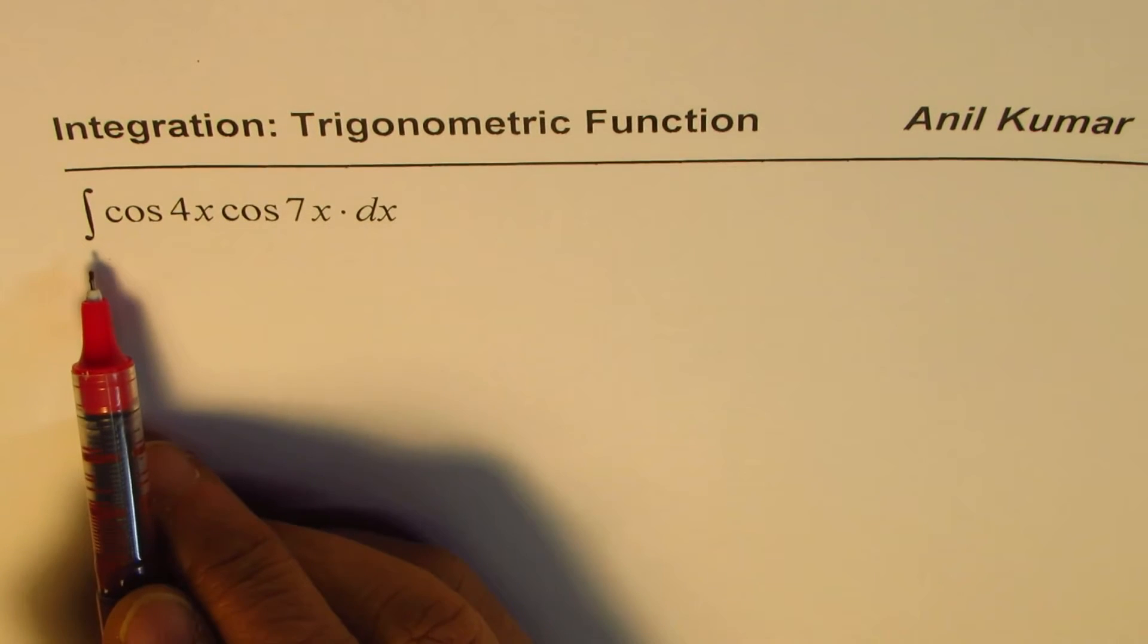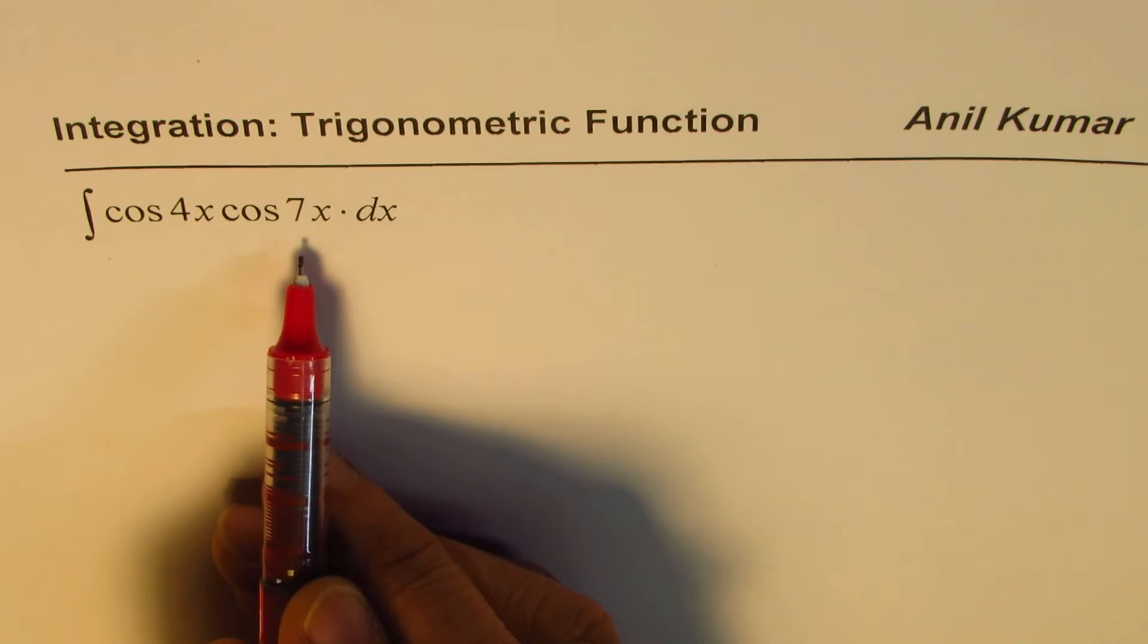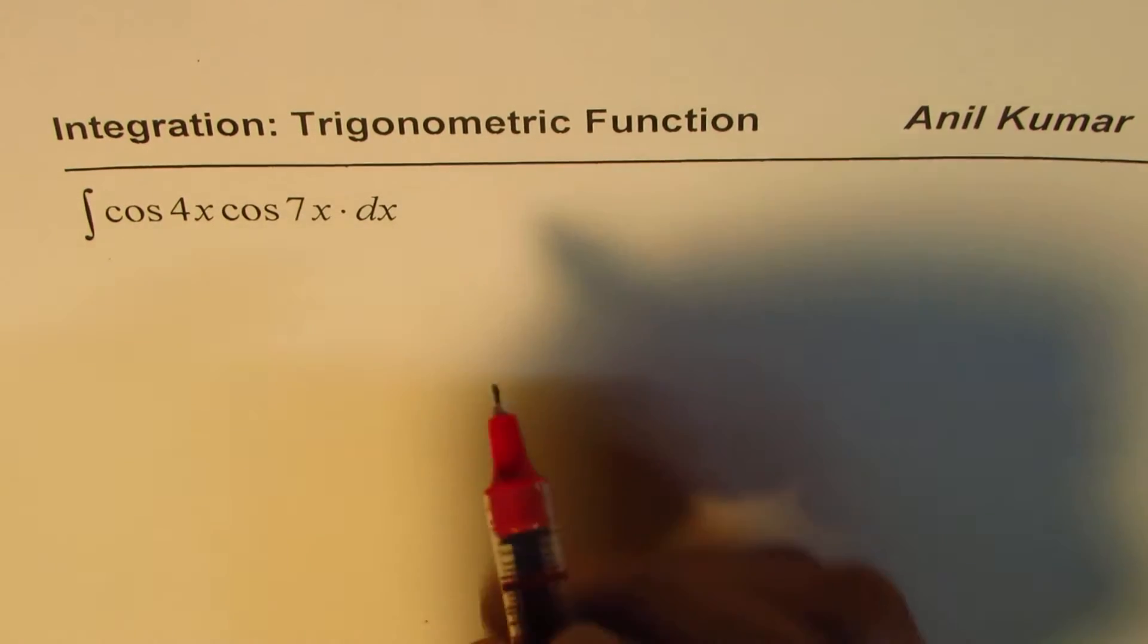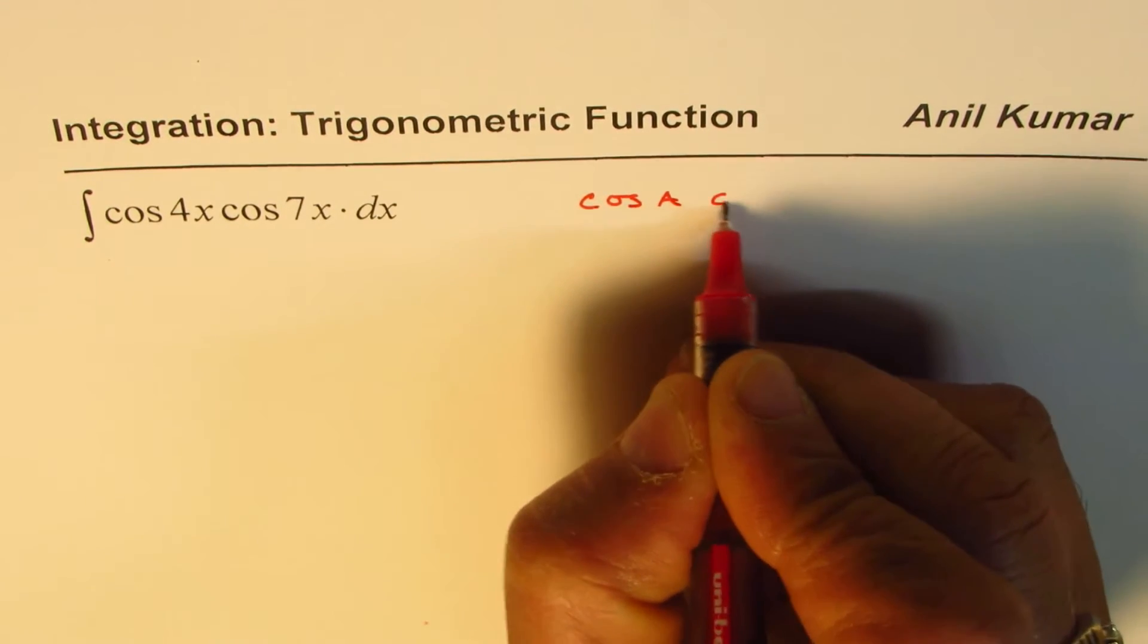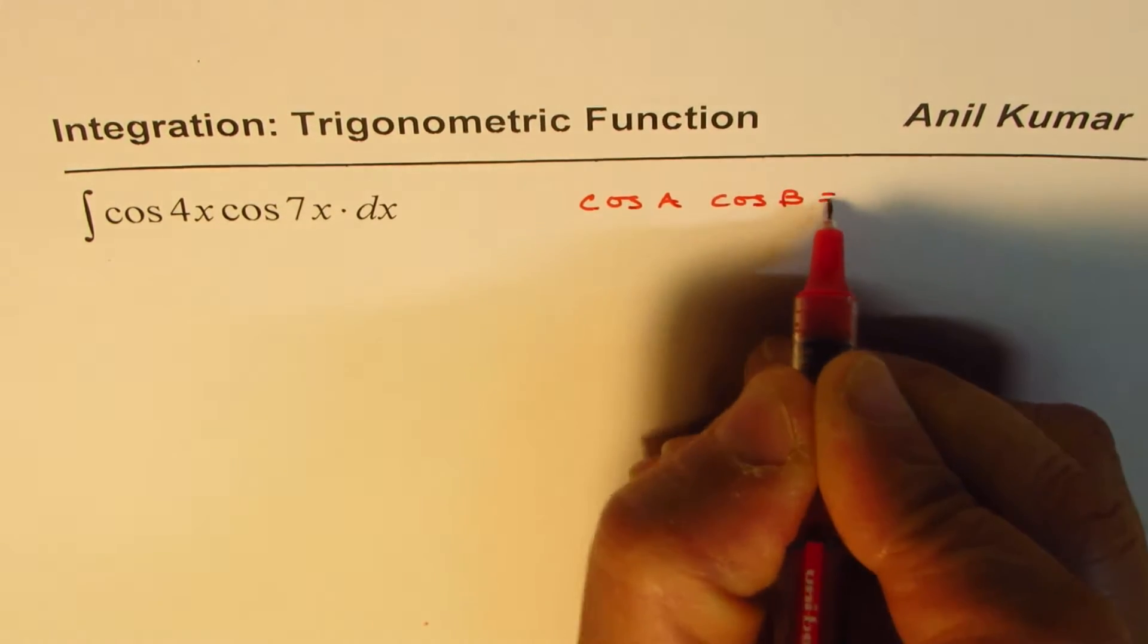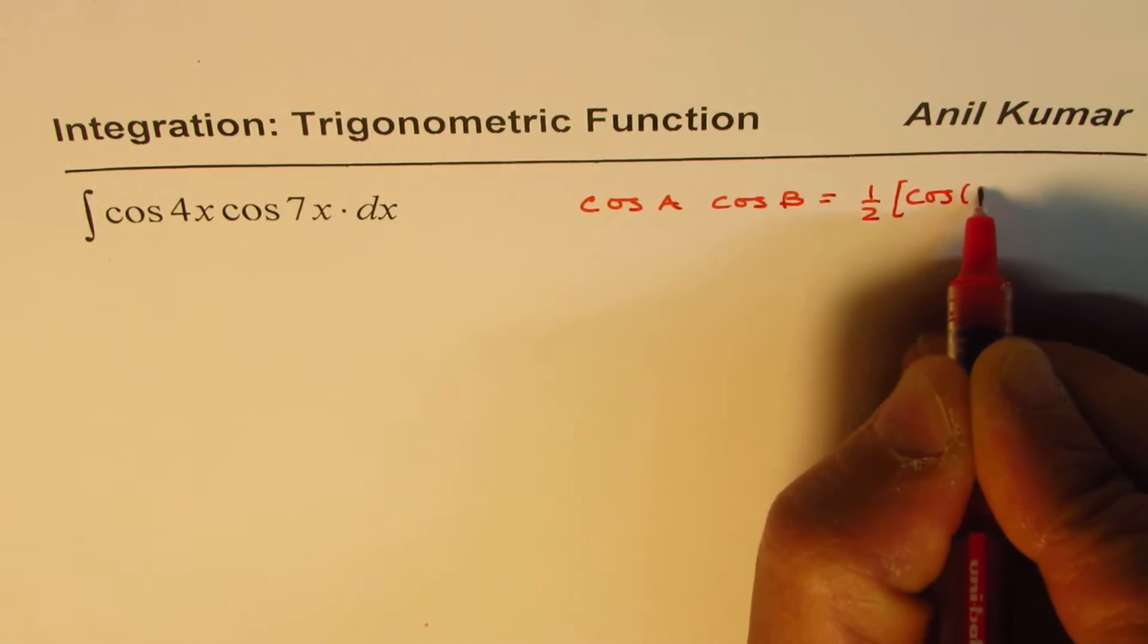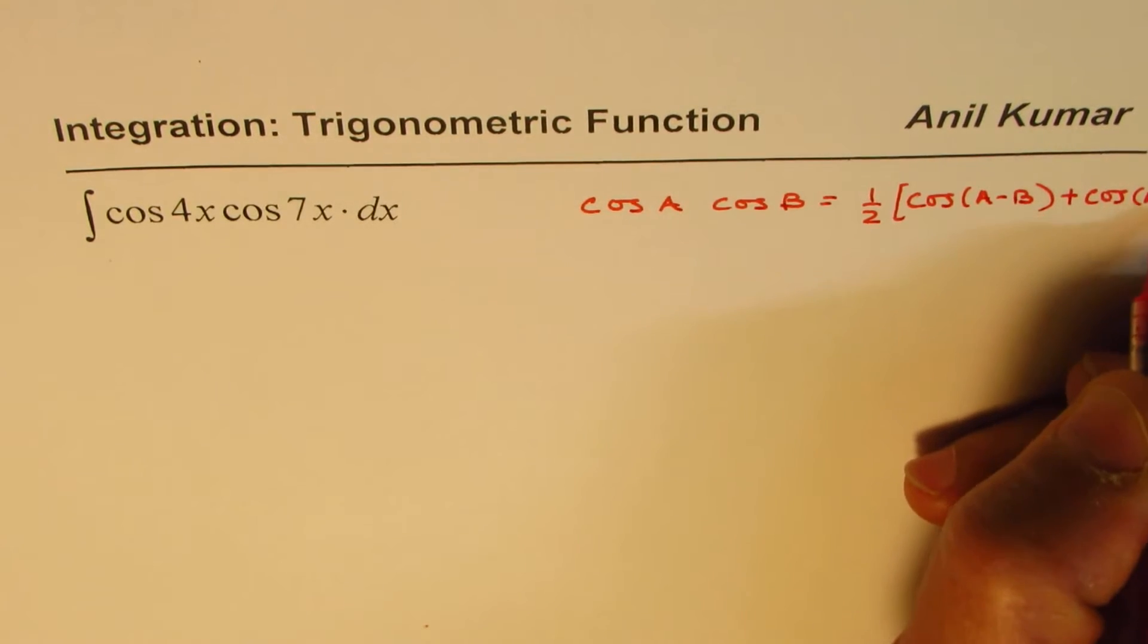So now we will integrate cos 4x, cos 7x. To do this, I hope you remember a formula, which is cos A cos B equals half [cos(A - B) + cos(A + B)].